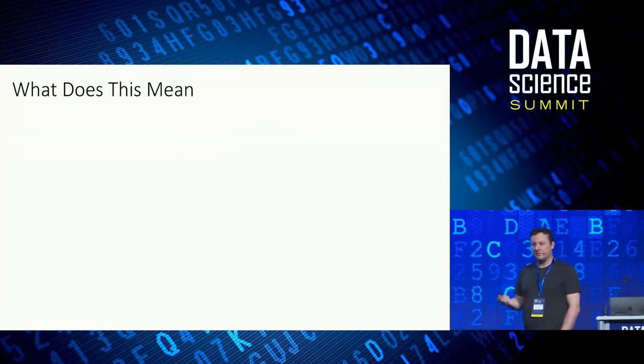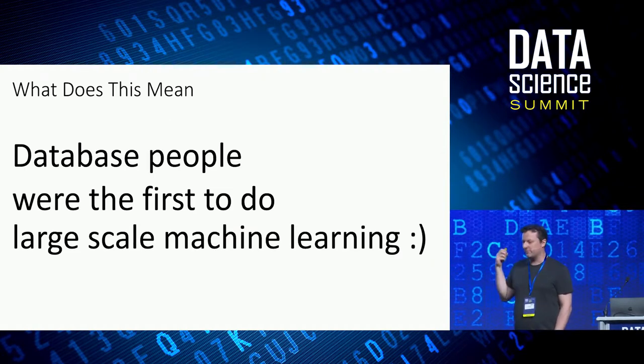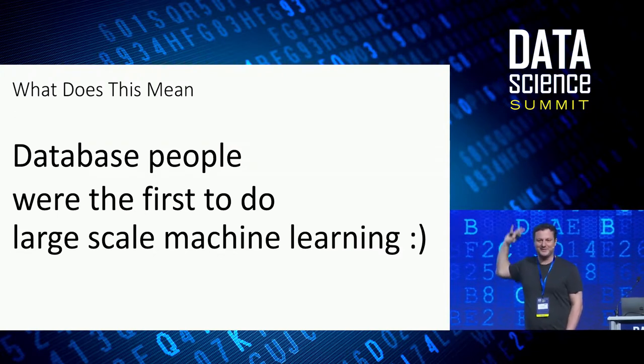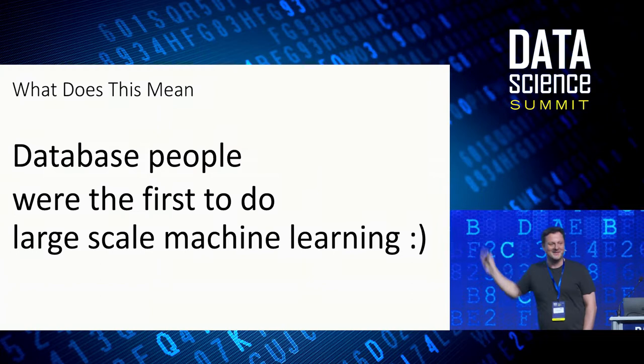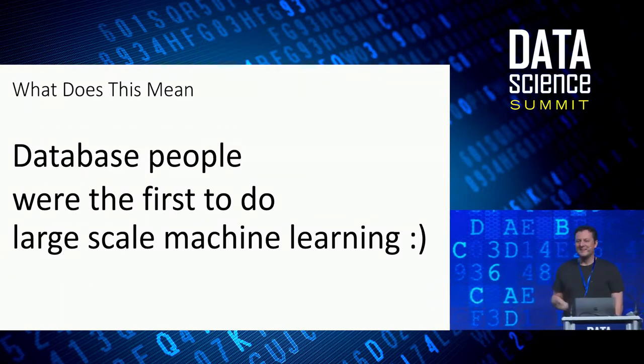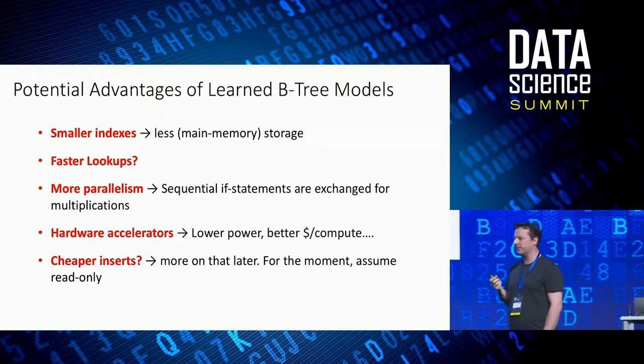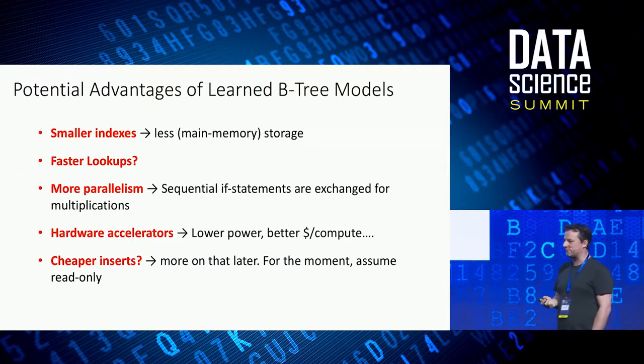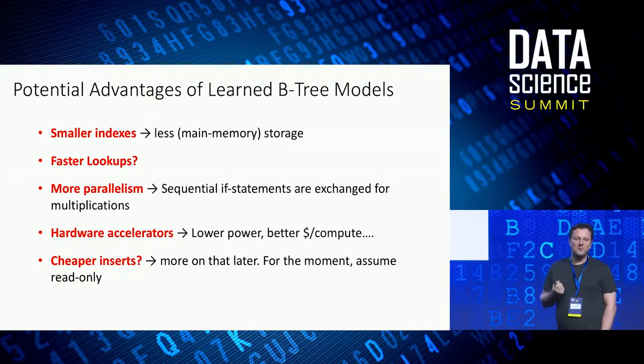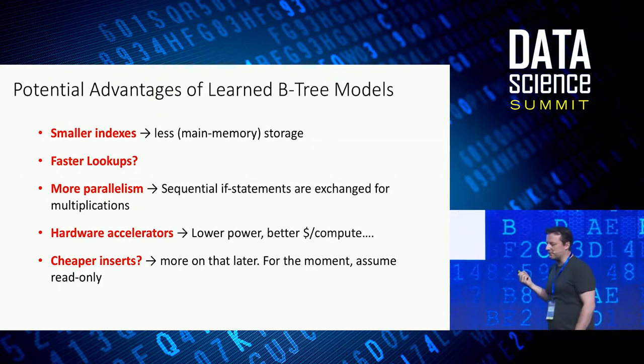In the case of a B-tree, what we do with the model is predict the CDF. The CDF, if you take the probability mass for any key you're looking up times the number of items you have stored, gives you the position inside the sorted array. This assumes we learn the empirical CDF we have, not the population CDF. If we have a perfect model about the empirical CDF, meaning all the data we have, we're learning nothing else than the CDF model, and that's our index. This is a very important takeaway: database people were really the first doing large-scale machine learning. It's proven now, and I consider myself a database person.